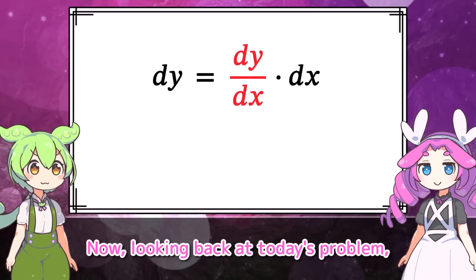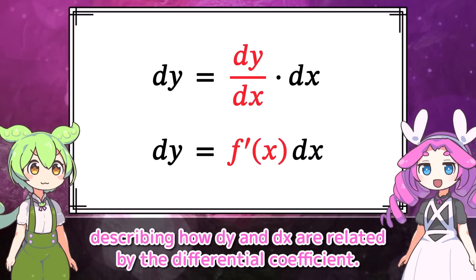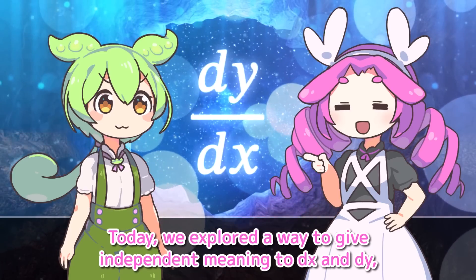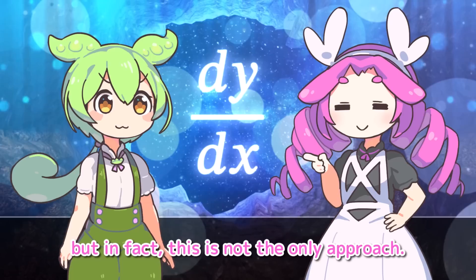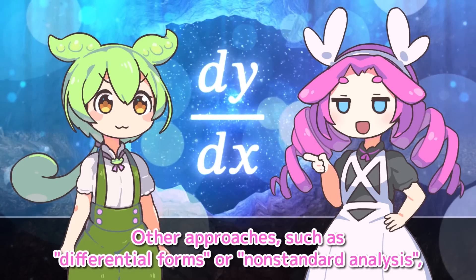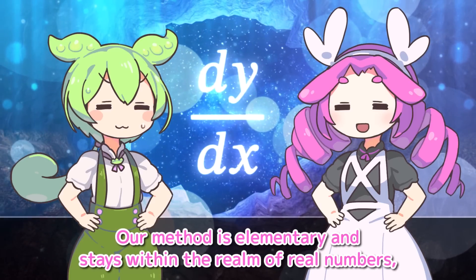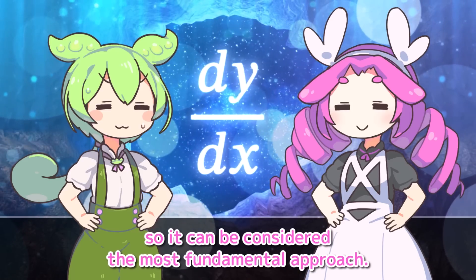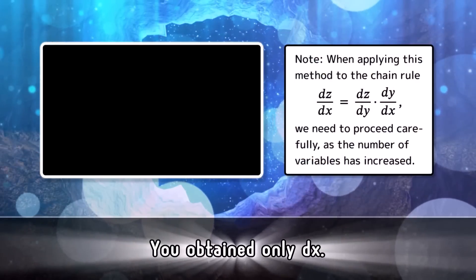Looking back at today's problem, if we rewrite dy by dx as f prime of x, this formula can be seen as describing how dy and dx are related by the differential coefficient. Finally, this relationship feels pretty natural. Today we explored a way to give independent meaning to dx and dy, but in fact this is not the only approach. Other approaches, such as differential forms or non-standard analysis, are also well known. Our method is elementary and stays within the realm of real numbers, so it can be considered the most fundamental approach. Take care everyone, see you again.